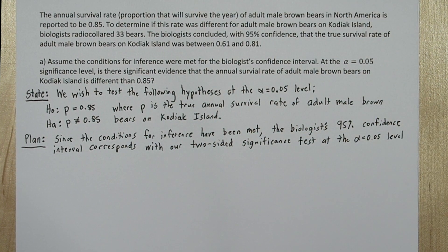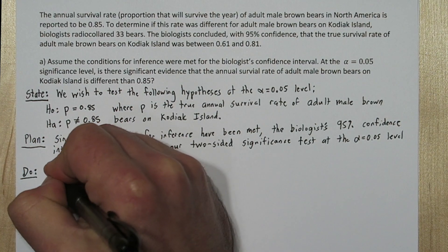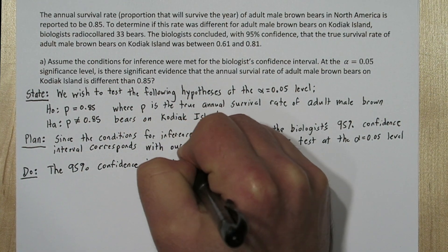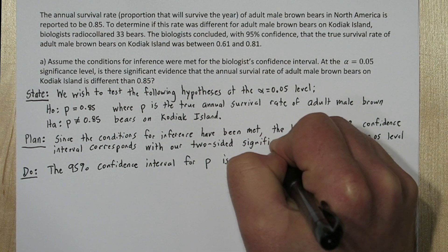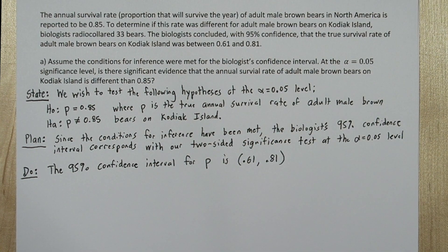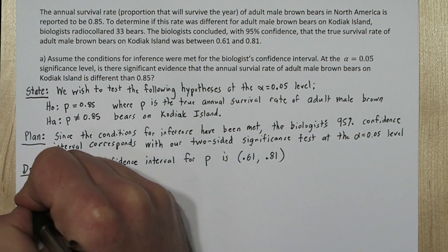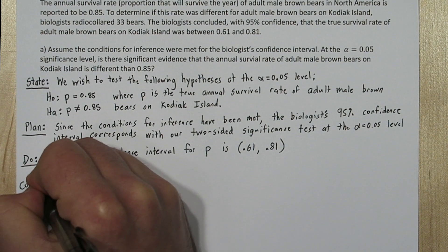For the do step, let's report the biologist's confidence interval. The 95% confidence interval for p is 0.61 to 0.81. Notice that 0.85 is not in our confidence interval.